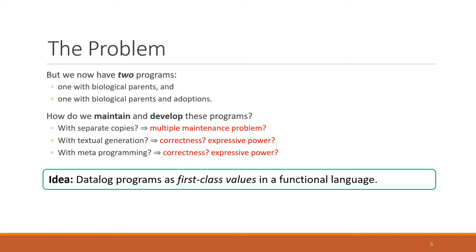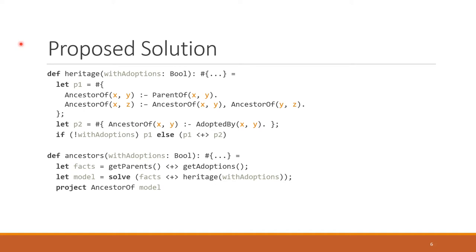So the main idea in our work is that Datalog programs should be first-class values inside a functional programming language. And so in our implementation, we can solve this problem with the two programs as follows. I'll write two functions here, heritage and ancestors. Heritage is going to encapsulate the two programs. It's going to take a boolean, whether to include adoptions, and it's going to return a Datalog program.